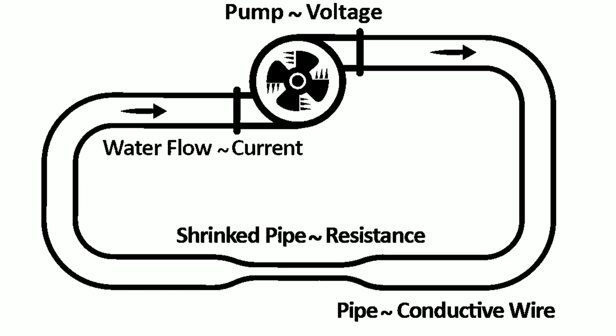If the pressure stays the same and the resistance increases, then the flow rate must decrease. In electrical terms, this is represented by two circuits with equal voltages and different resistances. The circuit with the higher resistance will allow less charge to flow, meaning the circuit with higher resistance has less current flowing through it.